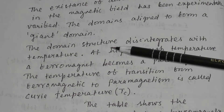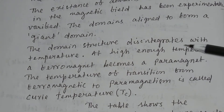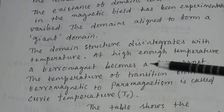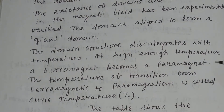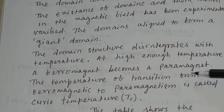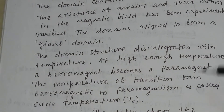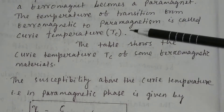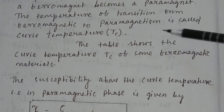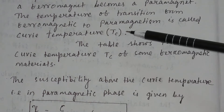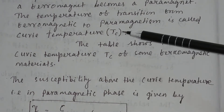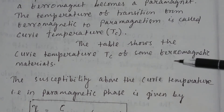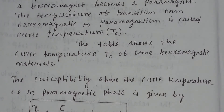The domain structure disintegrates with temperature. At a high enough temperature, a ferromagnet becomes a paramagnet. The temperature of transition from ferromagnetic to paramagnetic is called the Curie temperature, represented by the symbol TC. The table shows the Curie temperature of some ferromagnetic materials.